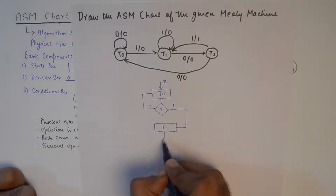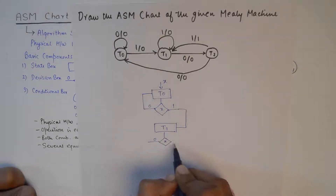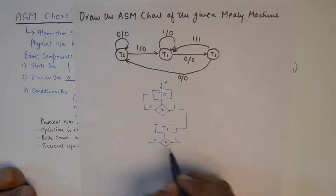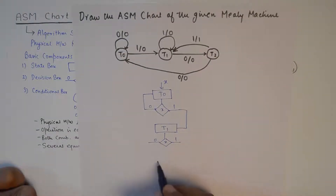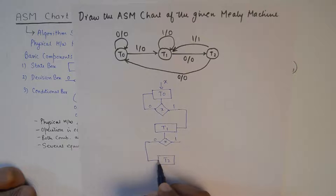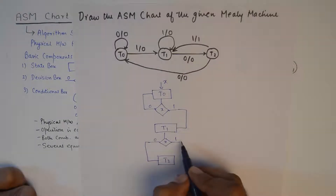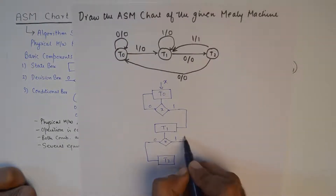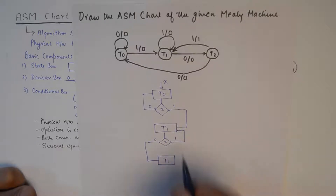At T1 we again have a decision to make — a 0 or a 1. Input 0 takes us to T2, which is another state, and the output is 0 so no conditional box is needed. Input 1 takes us back to T1 and the output is 0, so no conditional box is required there either.